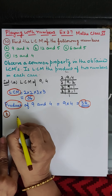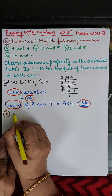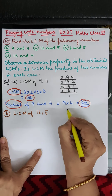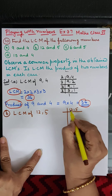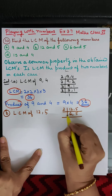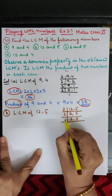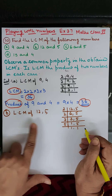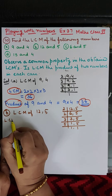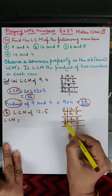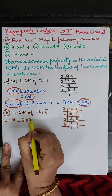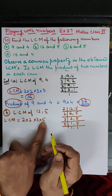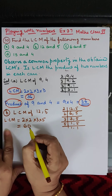Part B: we have to find the LCM of 12 and 5. We start dividing by 2: two sixes are twelve, five as it is; again two threes are six, five as it is; then three ones are three, five as it is; then five ones are five. So the LCM of 12 and 5 is two into two into three into five. Two twos are four, four threes are twelve, twelve fives are sixty. LCM is 60.